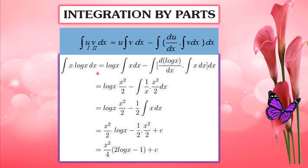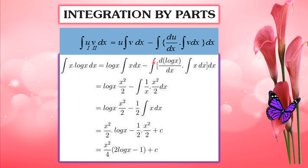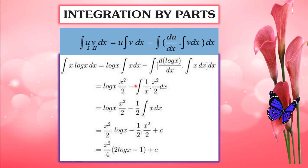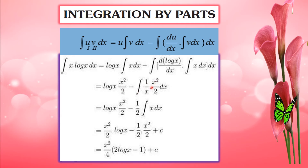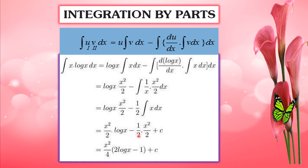For example, integral of x log x dx. Take log x as the first function and x as the second. We get: log x times x squared by 2 minus integral of 1 by x times x squared by 2 dx. This simplifies to x squared by 2 times log x minus 1 by 2 integral of x dx, giving x squared by 2 log x minus x squared by 4 plus c.